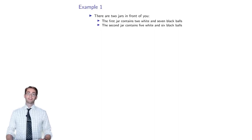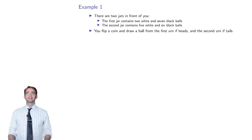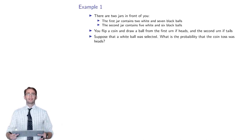You're gonna reach into one of these two jars and pull out one of these balls, which might be white or black. You're gonna flip a coin and draw a ball from the first jar. If you get heads, you pull a ball out of the first jar. Tails means you pull a ball out of the second jar. Suppose a white ball was selected and you want to know what is the probability that the coin toss was heads.